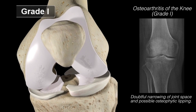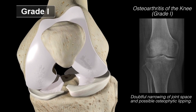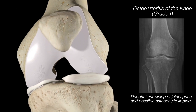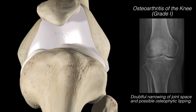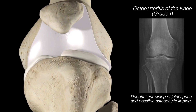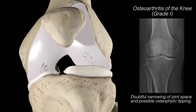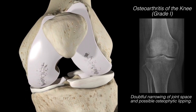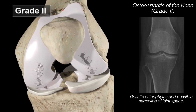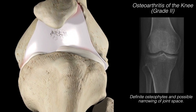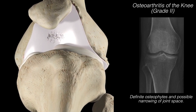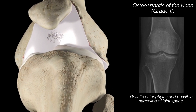Grade 1 is partial damage of joint cartilage characterized by minor bone spurs or osteophytes as well as very minimal joint space narrowing. Grade 2 has moderate cartilage damage with definite osteophytes or bone spurs and apparent joint space narrowing.